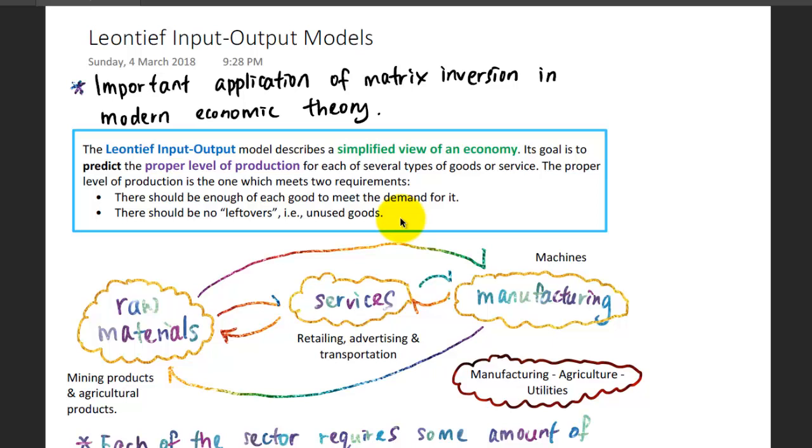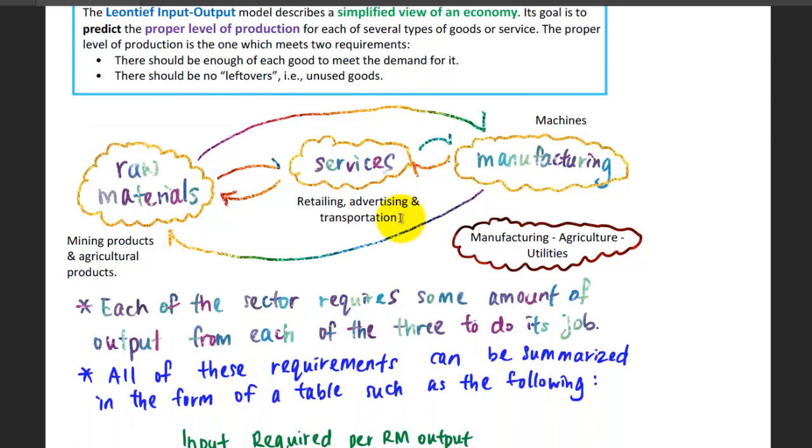That's why you need to know how much you need to produce for your particular industry. For example, for the textile industry to produce cloth, you need input from raw materials which could be cotton, the coloring agent, and the dye.